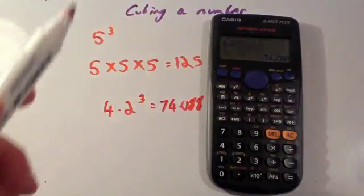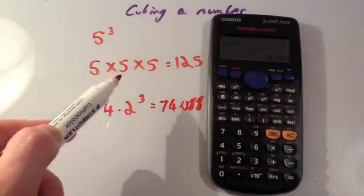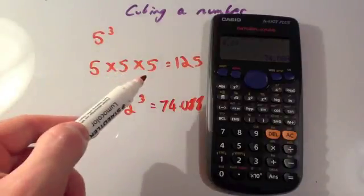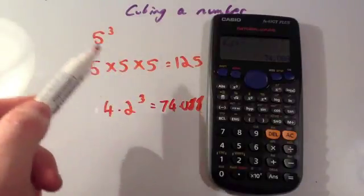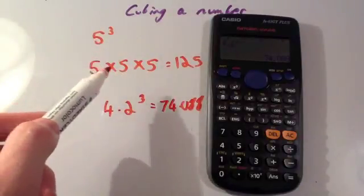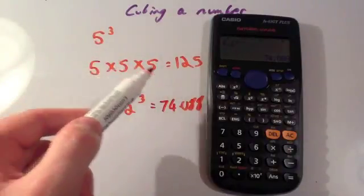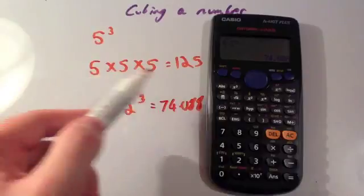And to cube a number, you multiply it by itself and by itself again. Or you write the number out 1, 2, 3 times and you multiply.